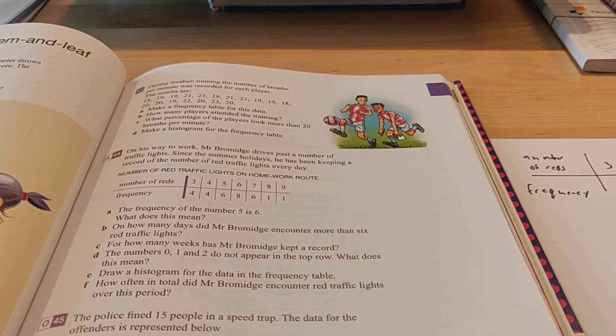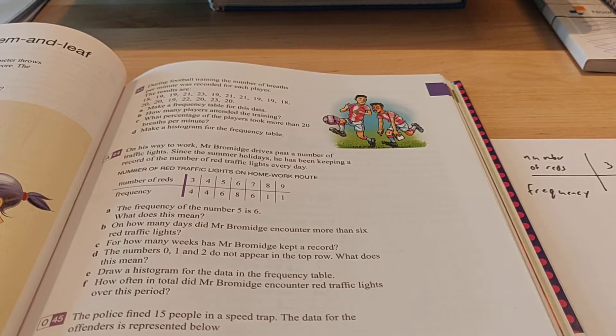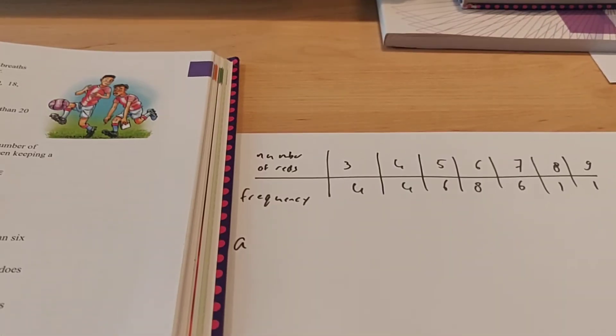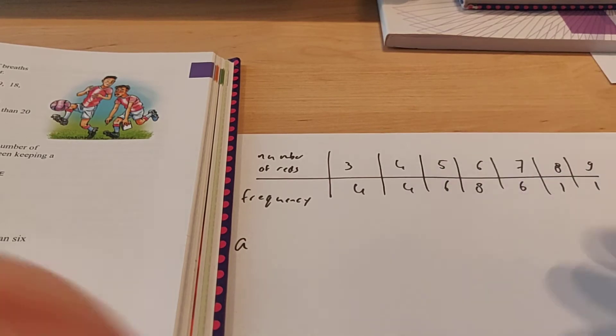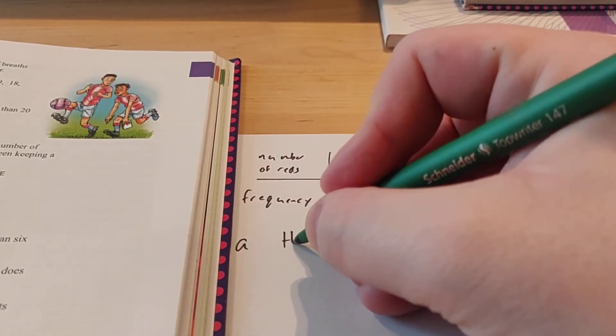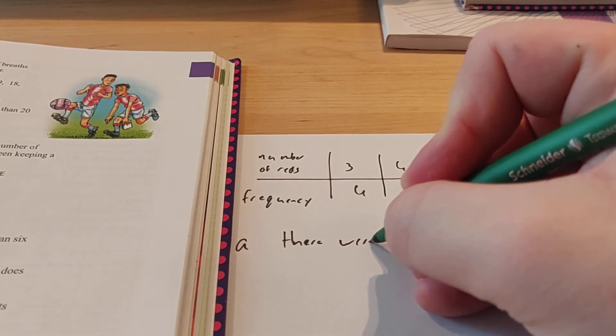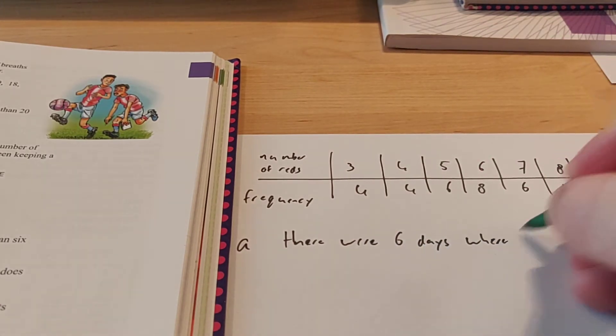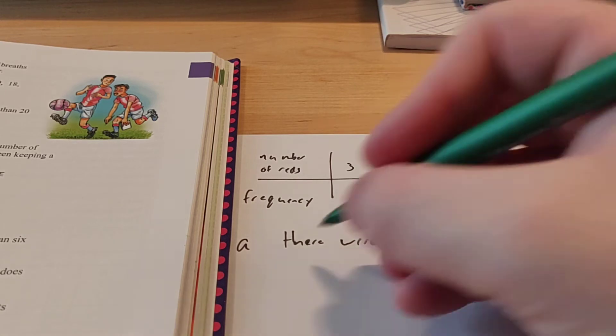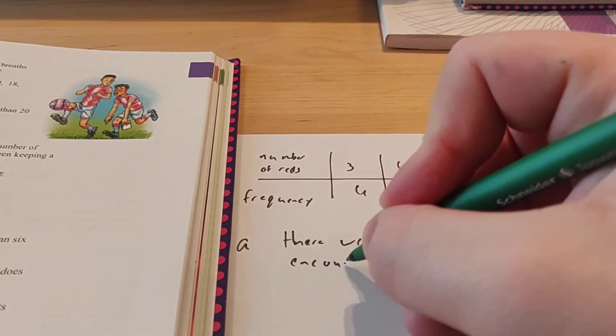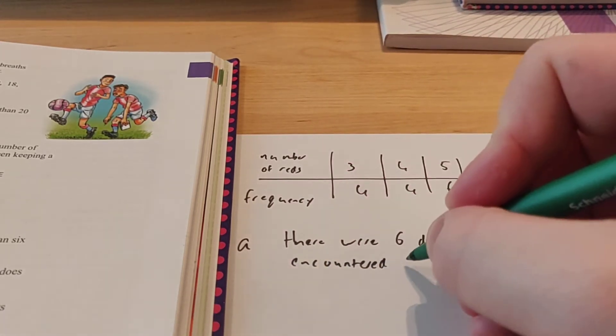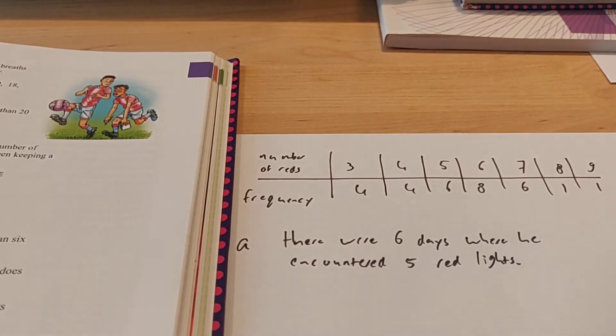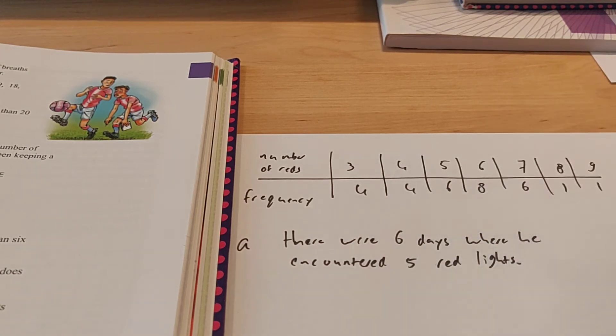Take a look at exercise A. It says the frequency of the number 5 is 6. What does this mean? Over here I also have the table. So for the number 5, the frequency is 6. That means that there were 6 days where he encountered, let me write that down, he encountered 5 red lights. This is the number of red lights where 5 happened 6 times.